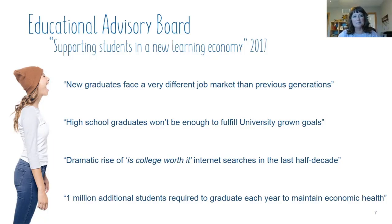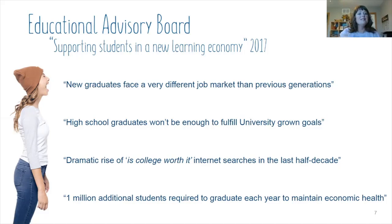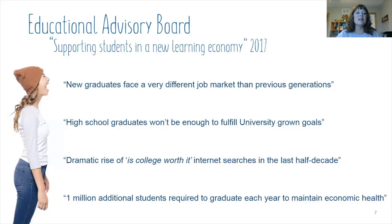The second thing the Educational Advisory Board highlighted is the decline in the number of high school graduates — not that fewer students are graduating, but that there are simply fewer high school students. Given enrollment goals universities have, they'll need to look in other areas to drive enrollment, and online learning is having a major impact by giving students many more options and opportunities for colleges.